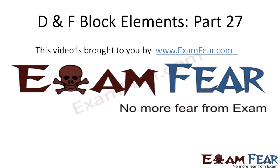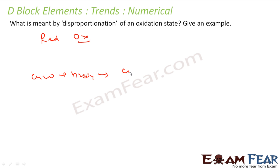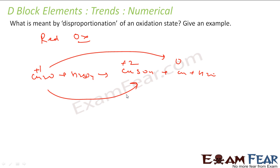This video on D-block elements part 27 is brought to you by examfa.com. The first question is: what is meant by disproportionation of the oxidation state? A reaction where reduction and oxidation take place simultaneously is called disproportionation. For example, Cu₂O reacted with sulfuric acid forms copper sulfate, copper, and water. Copper goes from +1 to 0 and +1 to +2 simultaneously — this is a disproportionation reaction.